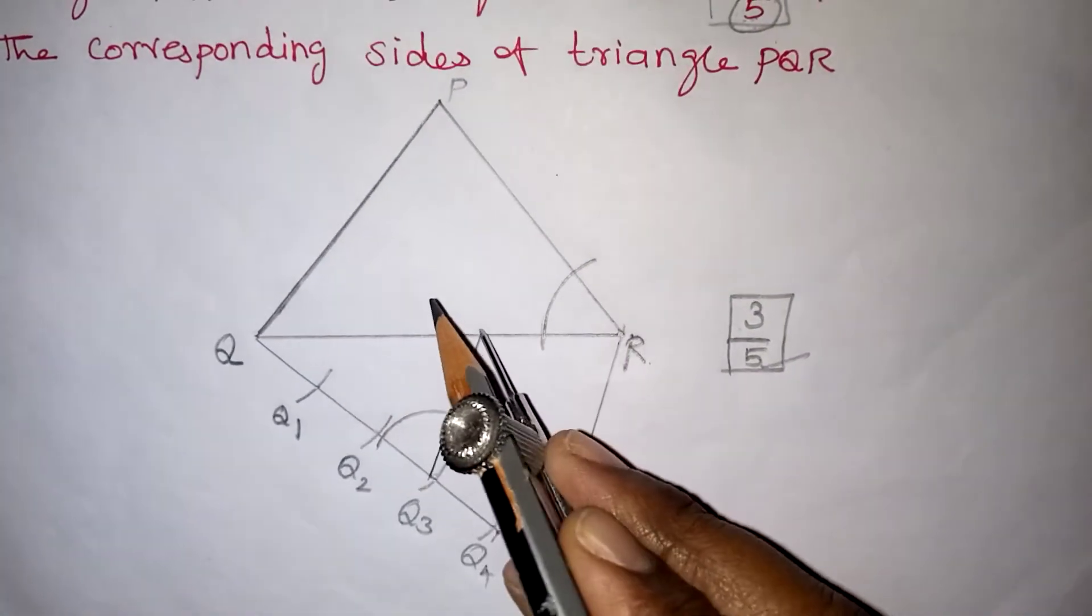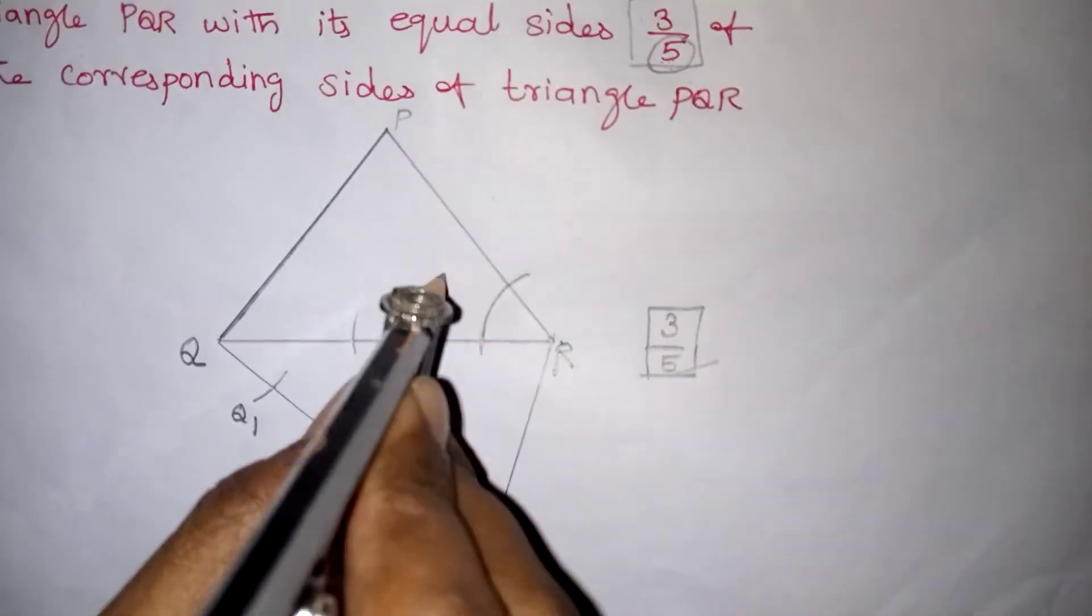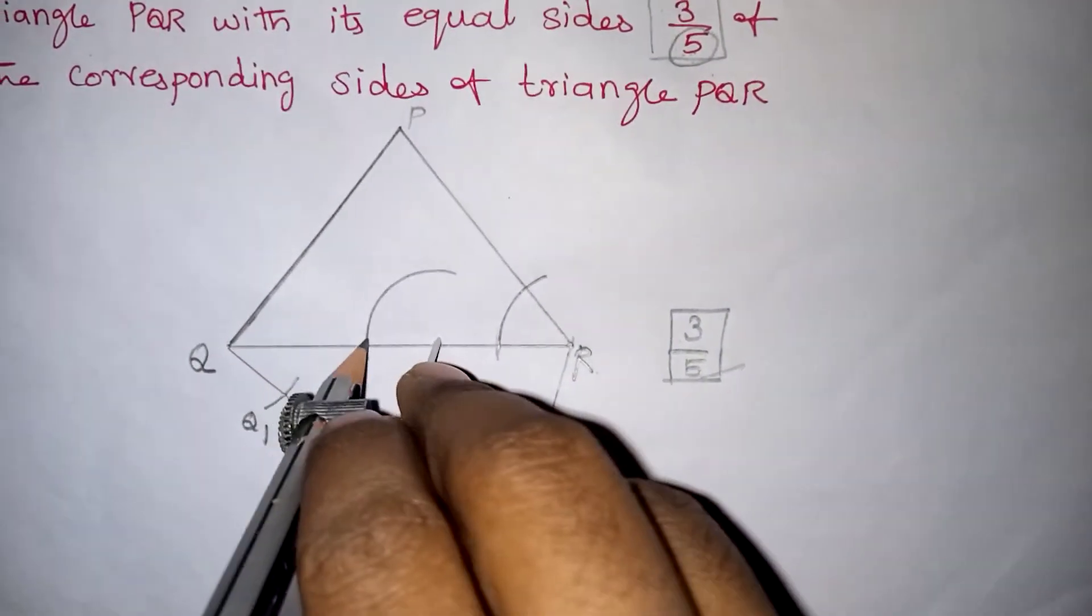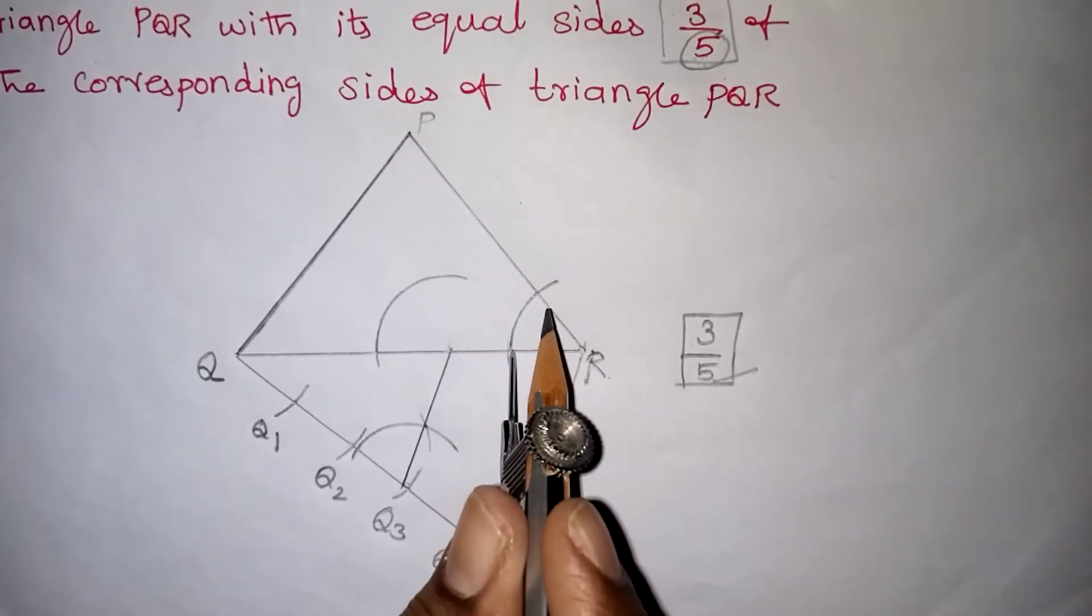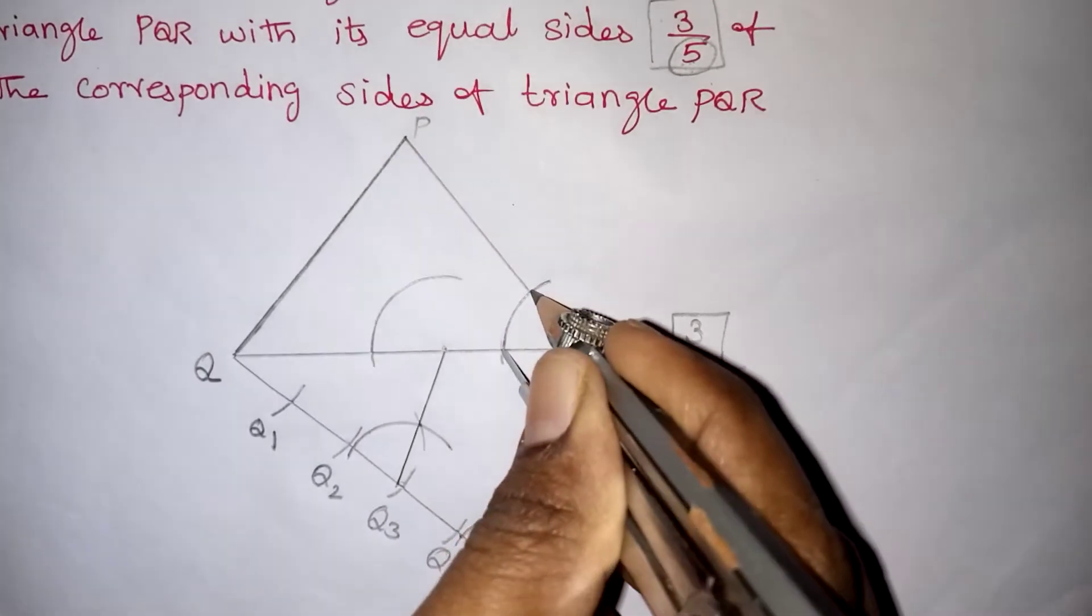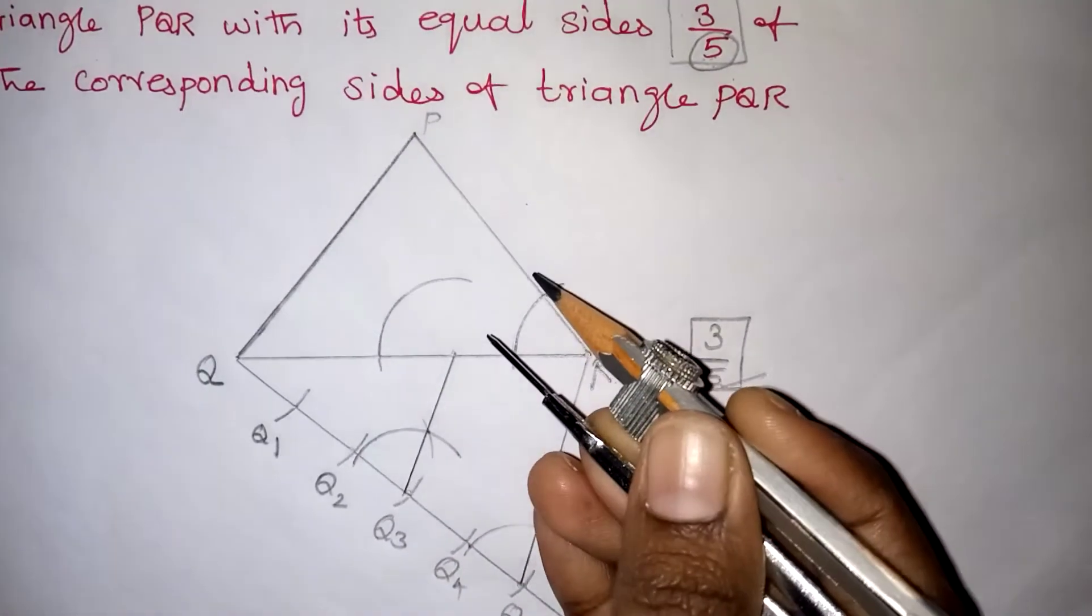After drawing this, take your compass. From this point also, you have to draw the same arc. After drawing this, you have to measure this angle by using the compass, needle, and pencil. Measure the arc angle like this.